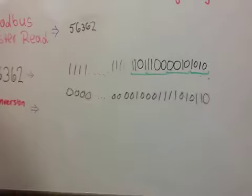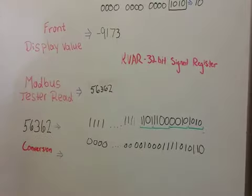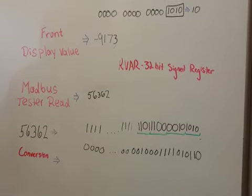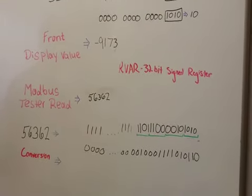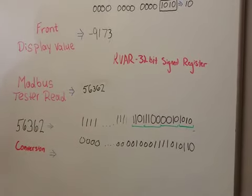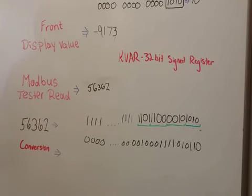And then once we read this value, it's going to read 9,173. And that's how we do the conversion between signed and unsigned, as well as Modbus Tester and EGX read a different number from the front display. And that's because they read it as an unsigned register.